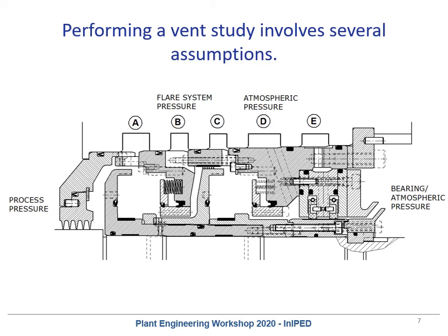The other two pressures to consider are the flare system pressure — what is Port B venting into? Is it a flare? Does that flare have a back pressure? And then Port D — what pressure is Port D going to be at? The vast majority of Port D secondary vents should be at atmospheric pressure, but every application is different. You need to make that assumption about your particular boundary conditions for your model.